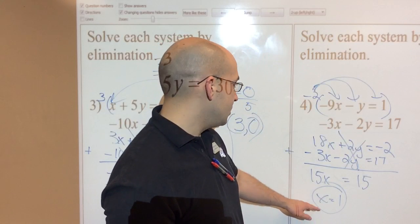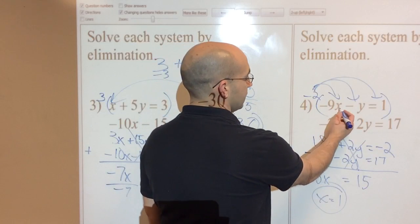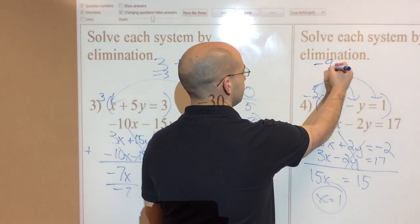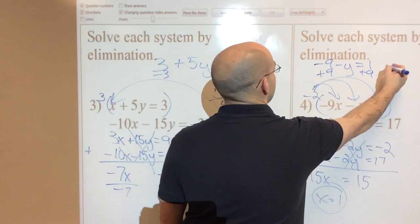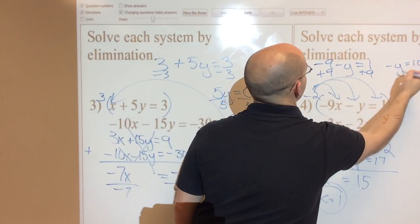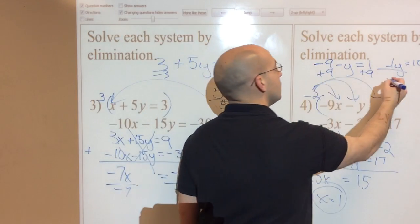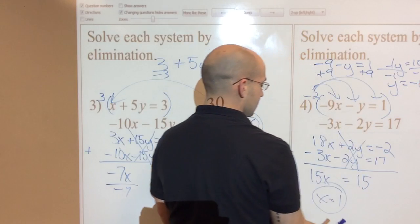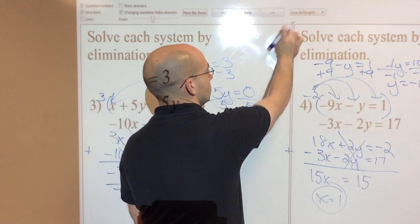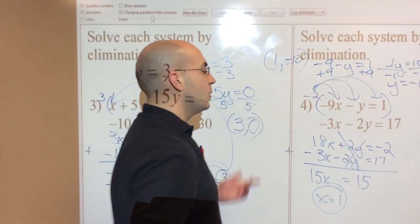Nice equation. I'll plug it back into the first equation, the original. So if x is 1, negative 9 times 1 is negative 9. Minus y equals 1. Plus 9 on both sides. And negative y is going to equal 10. But be careful. That's a negative 1y. Divide negative 1 on both sides. My answer is y equals negative 10. So my answer for this system is x is 1 and y is negative 10. Plug it back in to see.